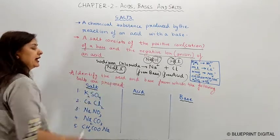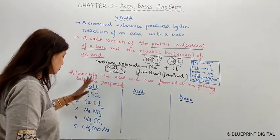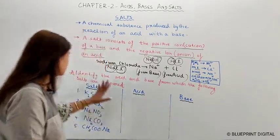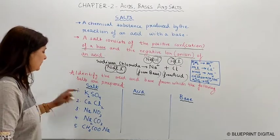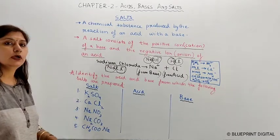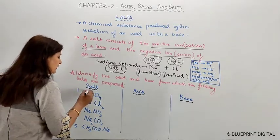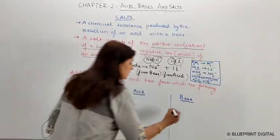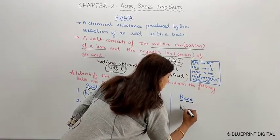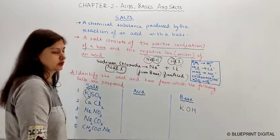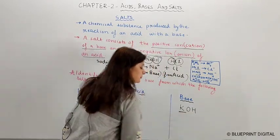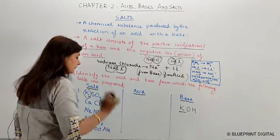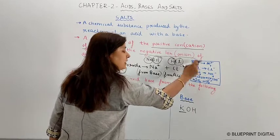Now let's identify the acid and base from which the following salts are prepared. The first salt is potassium sulfate, K₂SO₄. The first part of the salt — the positive ion — comes from the base. So the cation is potassium, which comes from the base potassium hydroxide, KOH. The anion is sulfate, which I have told you comes from sulfuric acid.